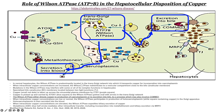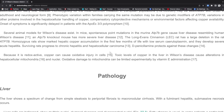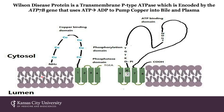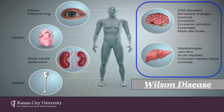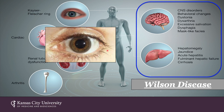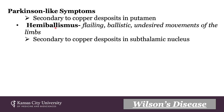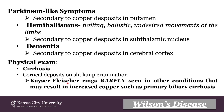ATP7B is a transporter that uses ATP to pump copper into bile and plasma. Wilson's disease manifests in CNS disorders, behavioral changes, dystonia, and dysarthria. In particular, Kayser-Fleischer rings are a hallmark of Wilson's disease — you can see the ring around the iris; in blue-eyed individuals it's more pronounced and easily seen. It presents with Parkinson's-like symptoms, hemiballismus, and dementia. On physical exam, your patients will have cirrhosis and Kayser-Fleischer rings, which are rarely seen in other conditions.